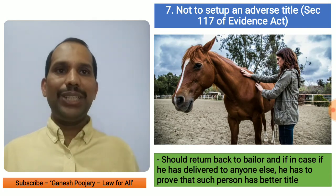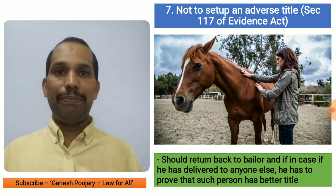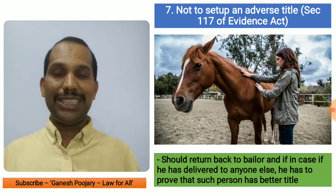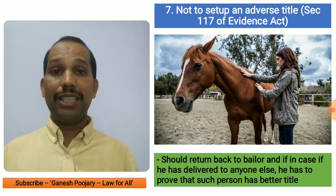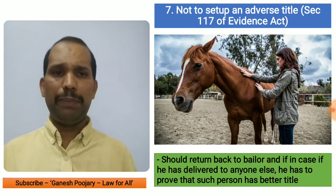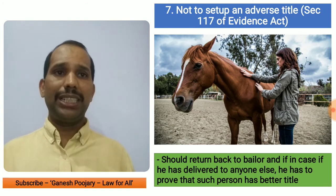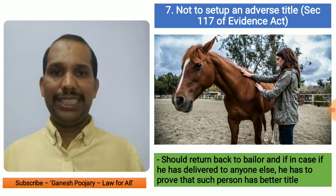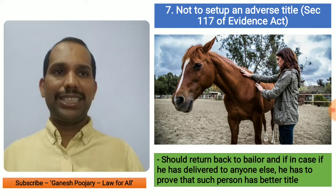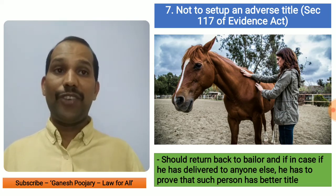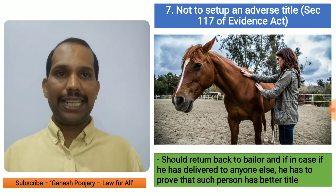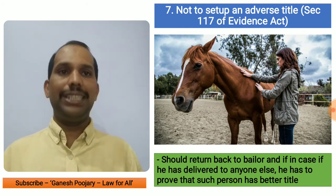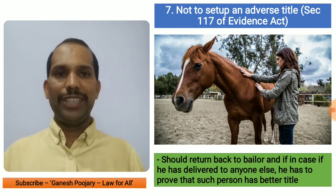The seventh duty is not to set up an adverse title. The Bailee cannot claim to be the owner of the horse, nor claim that somebody else is the owner, unless he can prove that they have a better title than the Bailor. He cannot set up any adverse title. This is discussed under section 117 of the Evidence Act — it is not directly under the Contract Act, but section 117 of the Evidence Act governs this.